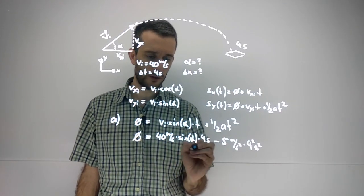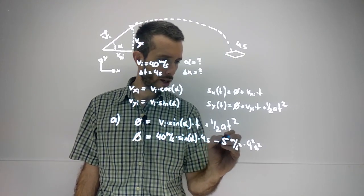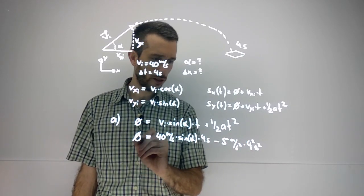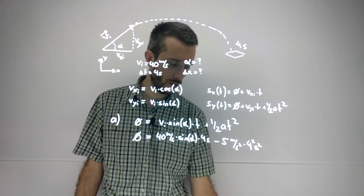Now, all I have to do is solve this for alpha. So I have 5 times 16, that I take on the left, and I divide it by the 40 times 4, and then isolate for alpha.